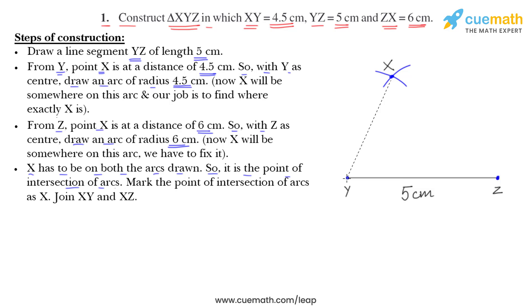We join X, Y and X, Z. This triangle XYZ is the required triangle whose sides are YZ is 5 cm, XY is 4.5 cm and ZX is 6 cm. This is the required triangle with the given sides.